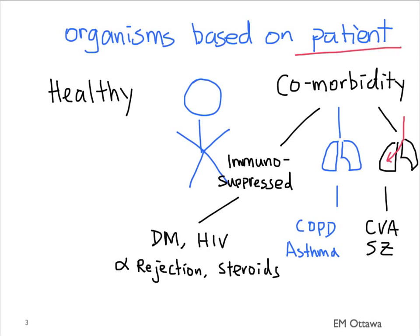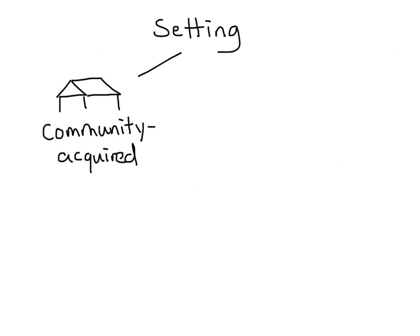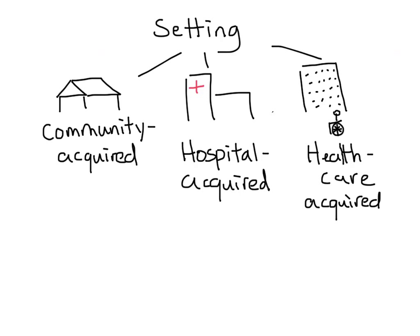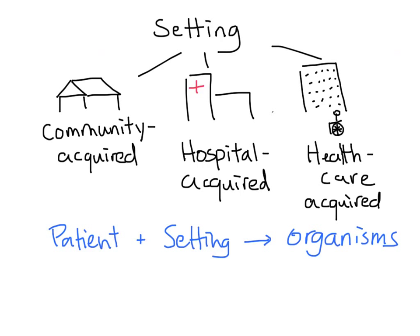The second part of the equation has to do with the setting — where did the patient acquire this pneumonia. Broadly, it is divided into community-acquired, meaning patients live independently in their own home and are not exposed to other sick people; hospital-acquired, meaning the patient picks up the infection from a hospital setting; and lastly, healthcare-acquired, for patients living in long-term healthcare facilities such as nursing homes.